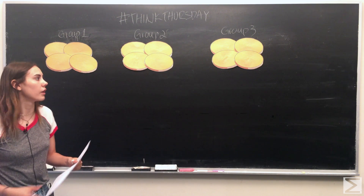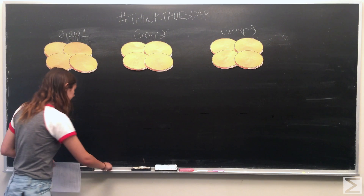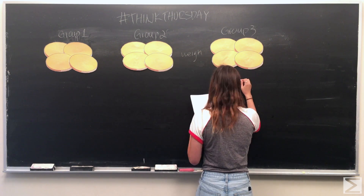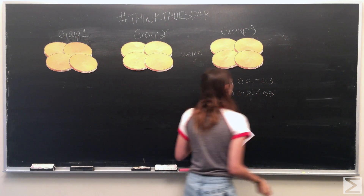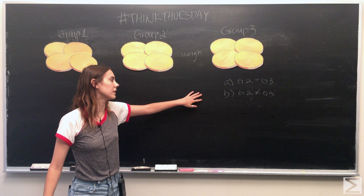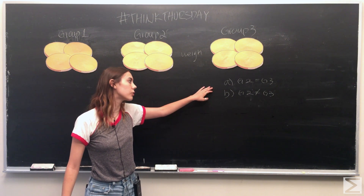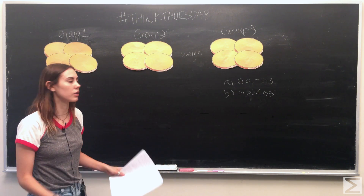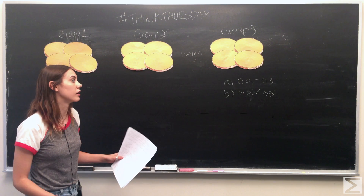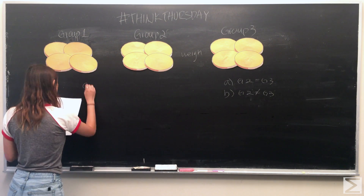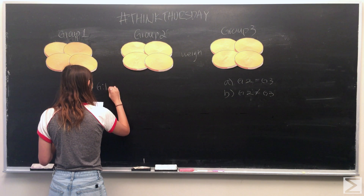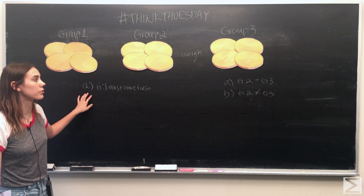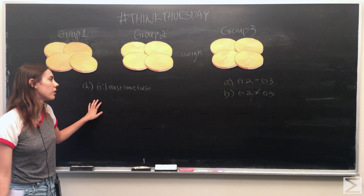If you do that, there are two different options for what can happen. If we weigh group two and group three against each other, we can either get that group two and group three are equal, or that group two and group three do not equal each other in weight. We'll go through each of those scenarios. In case A, where group two and group three are equal, we know that group one must have the false coin.